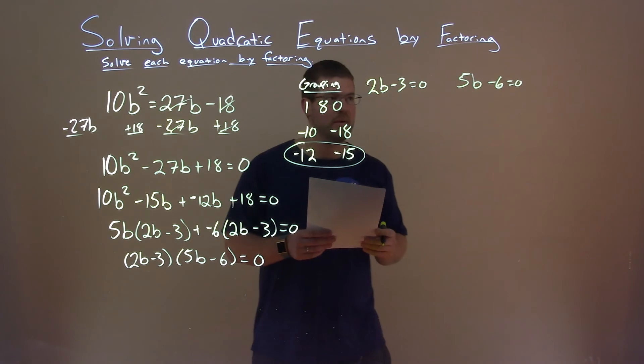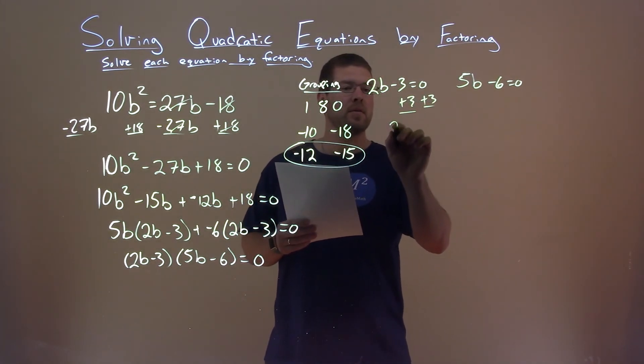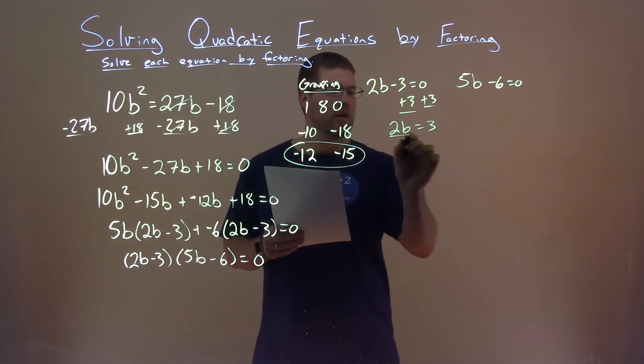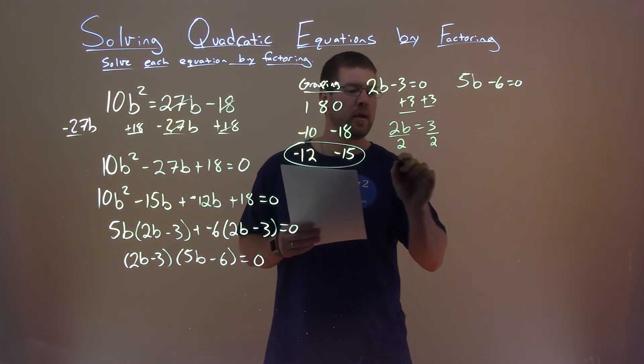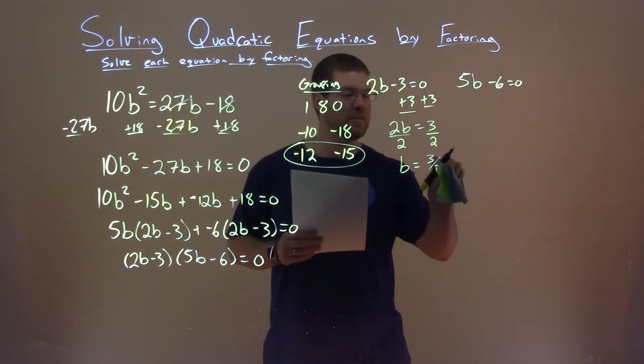And we're going to solve for b in both equations. We add a 3 to both sides, 2b equals a positive 3. Divide both sides by 2, and b equals three halves.